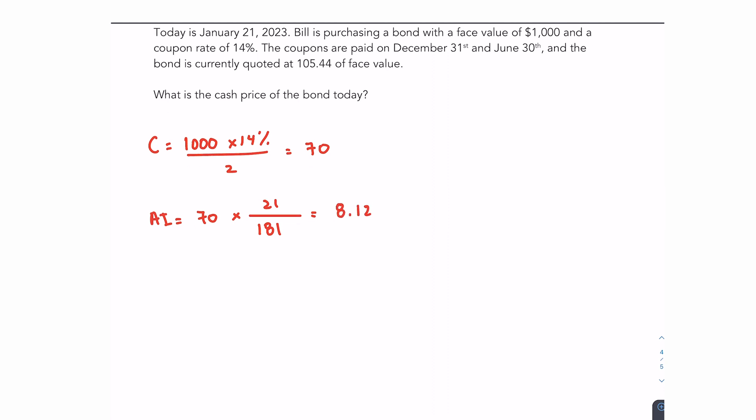Next would be to convert that quote into a price. So if it's quoted at 105.44 of the face value, the quoted price would be $1,054.40. Once again, that is because a quote is simply a percentage of the face value. So 105.44% of $1,000.